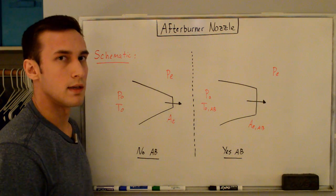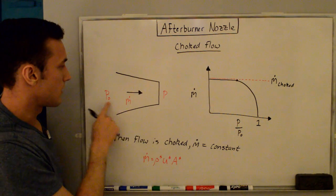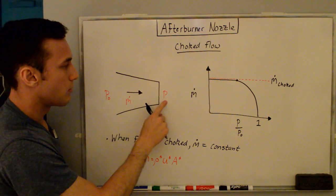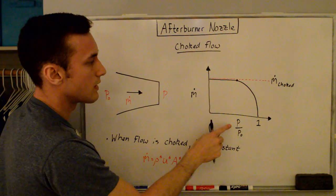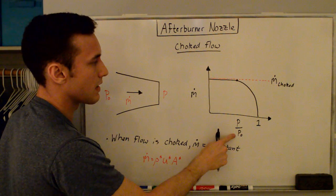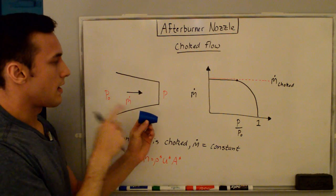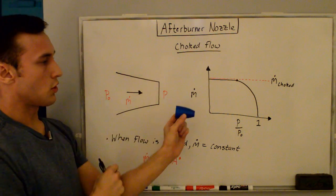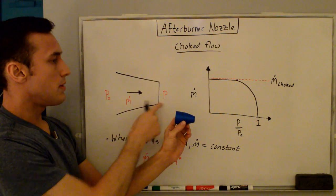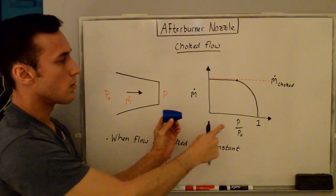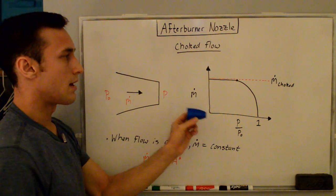Before the math, let me go over choked flow. We have a converging nozzle with stagnation pressure at the inlet and exit pressure at the outlet. I have a plot of mass flow rate versus the ratio of exit pressure over stagnation pressure. If P₀ equals PE, the ratio equals one and there's no mass flow rate — as shown with this 3D-printed nozzle just sitting here. If I increase the stagnation pressure by blowing into this side, the ratio decreases and mass flow rate increases, as seen in the plot.